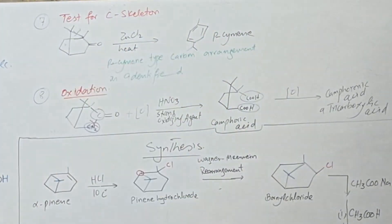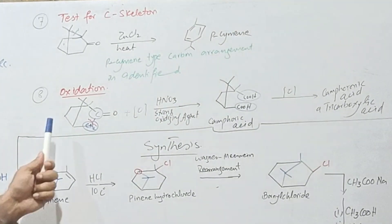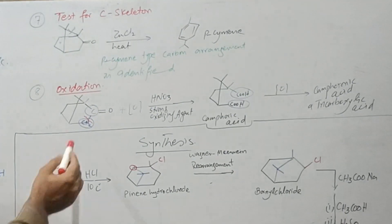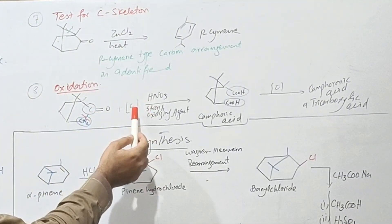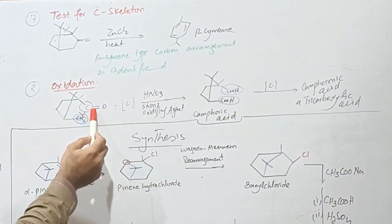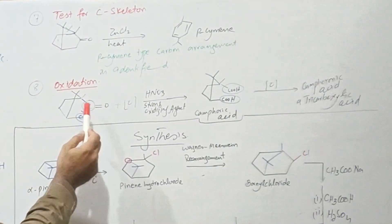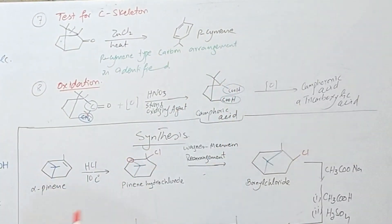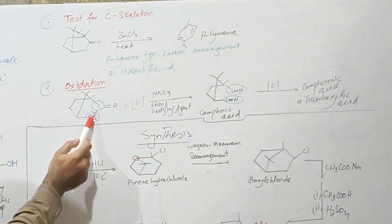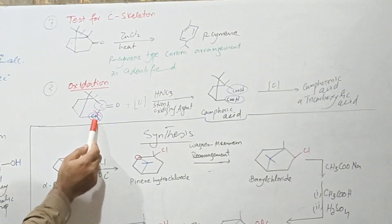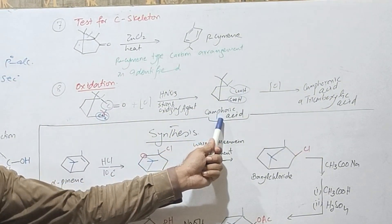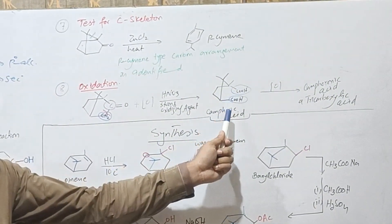So when camphor undergoes oxidation, as we have studied that carbonyl when reacts with strong oxidizing agent they undergo oxidation, and this carbonyl group is changed into carboxyl group. The carbon adjacent to the carbonyl group also undergoes oxidation, and we get dicarboxylic acid which is called as camphoric acid. Structural elucidation of camphoric acid shows that...